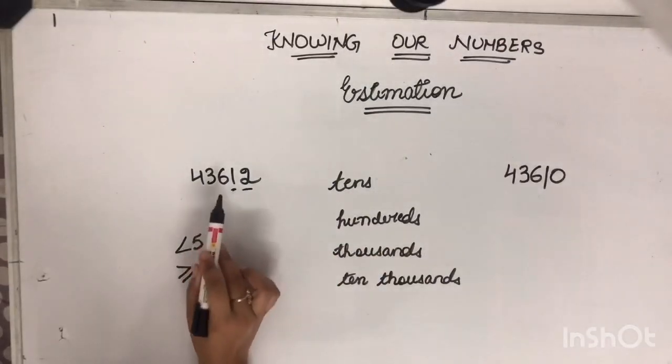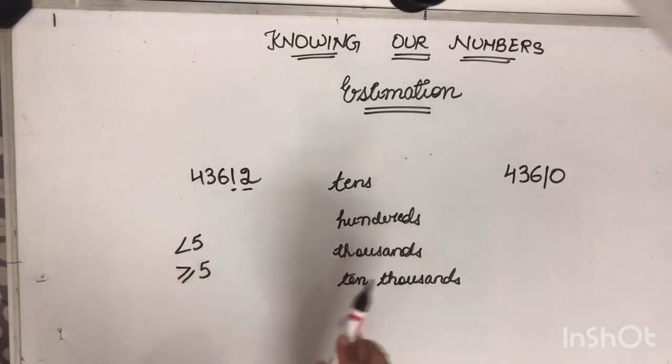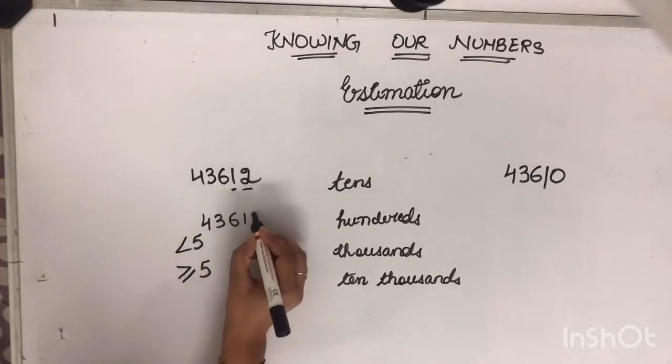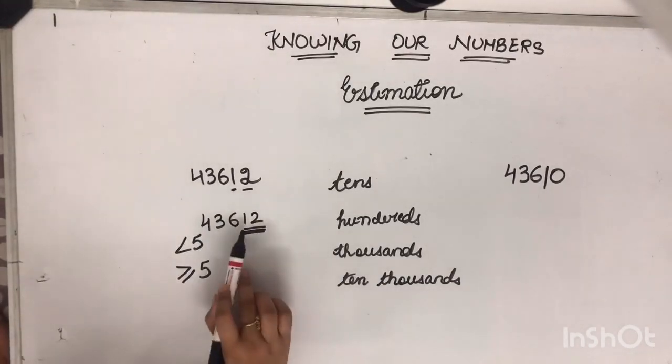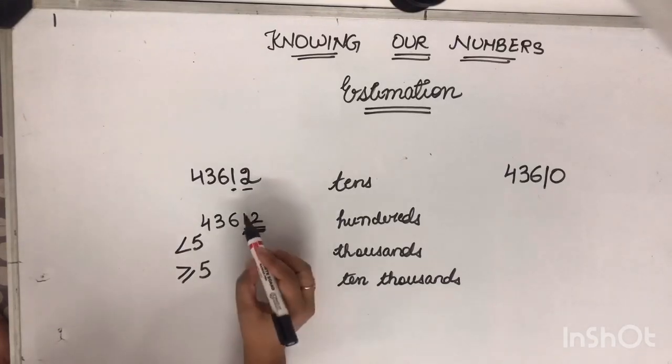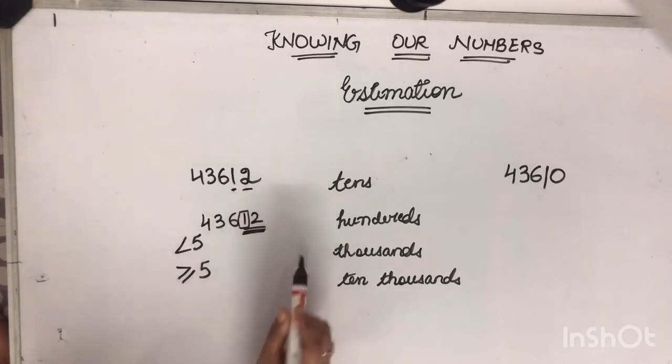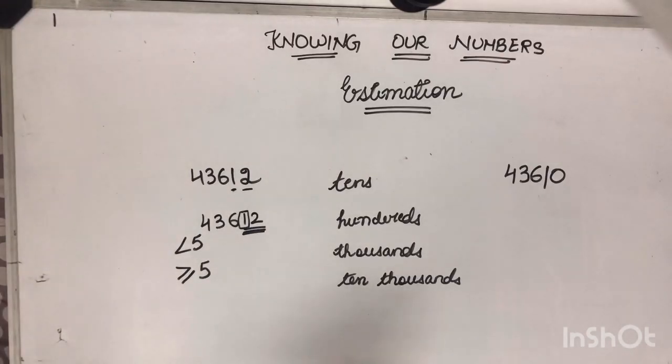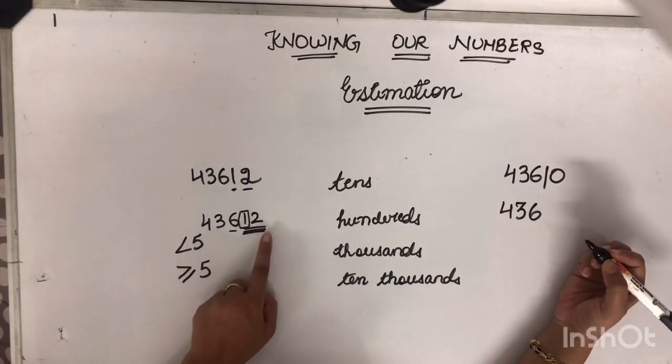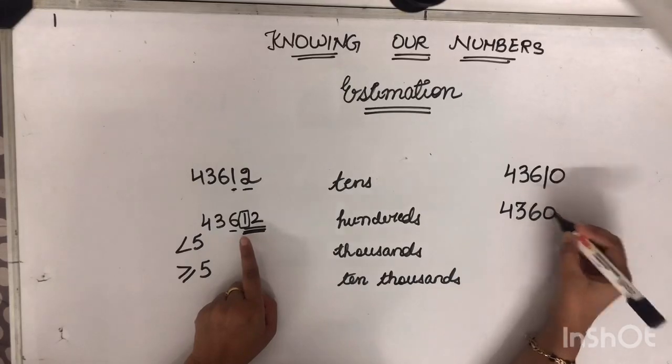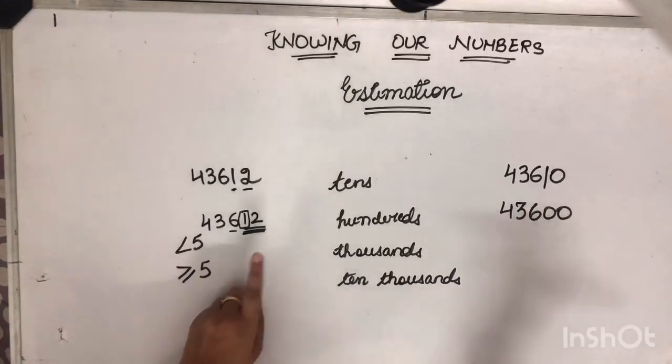We have to round off this number to nearest hundreds. मतलब ये जो last के 2 digits है. इन दोनों digits को हमें क्या बनाना है? 0. मतलब double 0. तो अब हम क्या करेंगे? इस number को देखेंगे. That whether this number is greater than 5 or less than 5. Now this is 1. 1 is less than 5 or greater than 5? Less than 5. It means 6 will remain unchanged. तो number will be 4, 3, 6. अब 1 और 2 को क्या लिखना है? 0. So 1 की जगा भी 0 and in place of 2 also you will write 0.